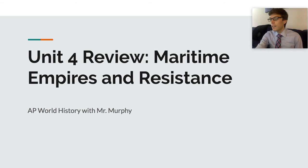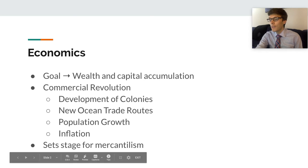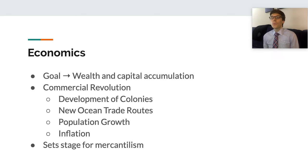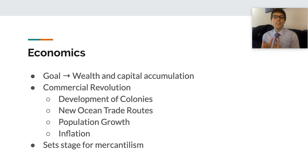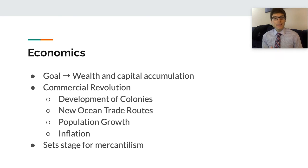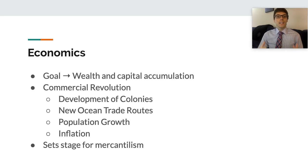Speaking of economic changes, the goal of these empires was wealth accumulation. In the 17th century, Europeans measured a country's wealth by how much gold or silver it had in its treasury. Countries used economic strategies designed to sell as many goods as possible to other countries to obtain maximum gold and silver, while spending as little of those precious metals as possible on imports — which leads to the rise of mercantilism, creating a positive balance of trade.